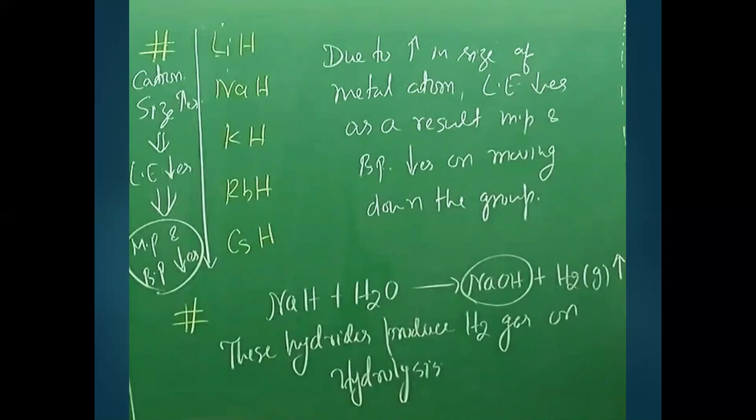When ionic hydrides react with oxygen, they form metal oxides and water. Rubidium hydride and cesium hydride are so reactive they burn spontaneously at room temperature, while lithium hydride is unreactive at moderate temperature and requires very high temperature to react with oxygen. Moving down the group, reactivity toward oxygen increases.